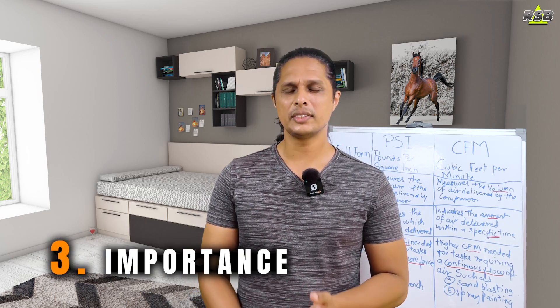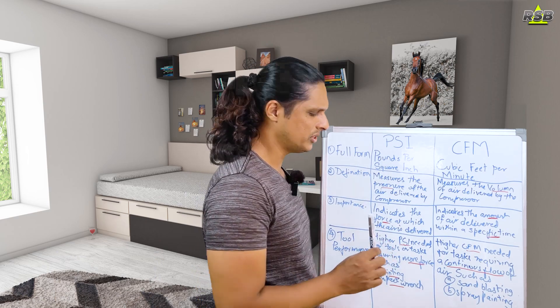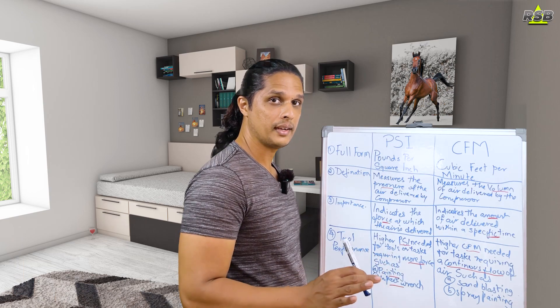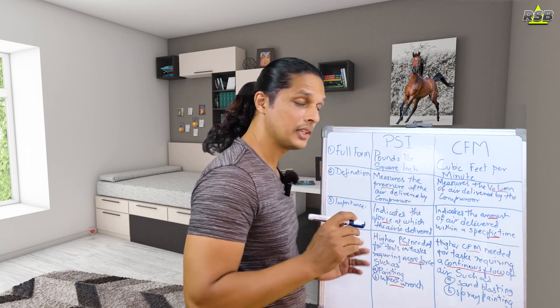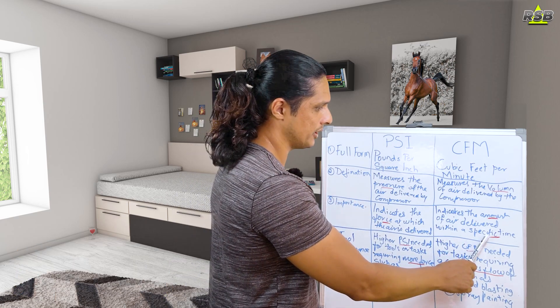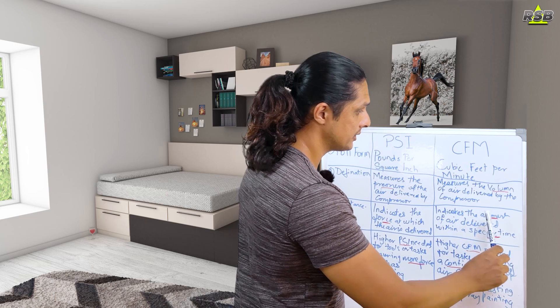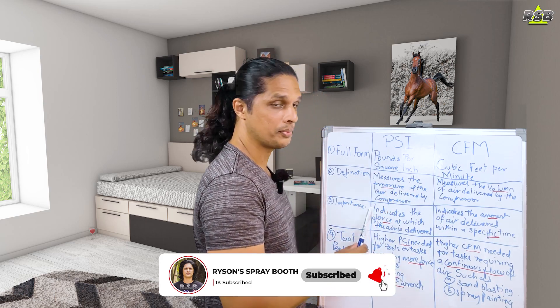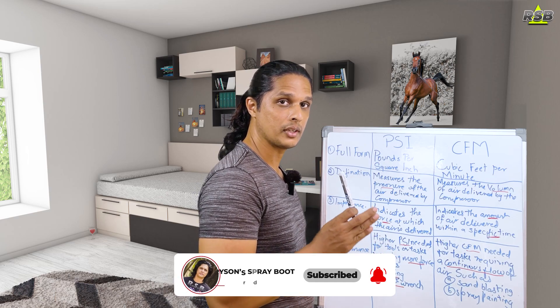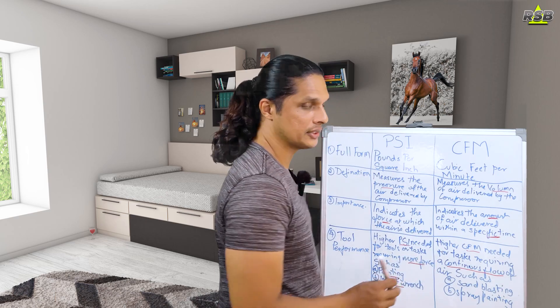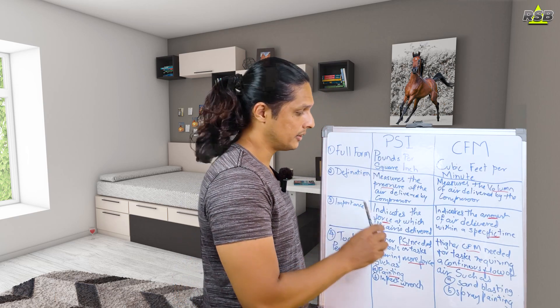Now that you know the definitions, let's move on to the importance of these units — what PSI indicates and what CFM indicates. PSI indicates the force at which the air is delivered. Whereas CFM indicates the amount of air delivered within a specific time — time is important here. When it comes to PSI, only the force at which the air comes out is involved. The important words are marked in red on the board so you know what to focus on.